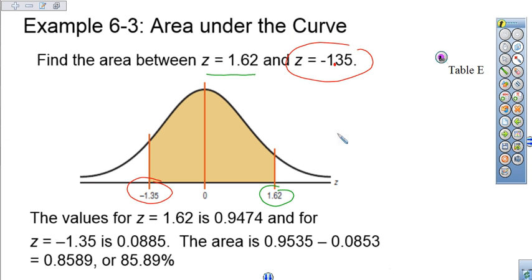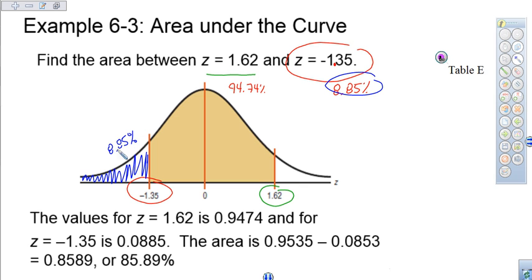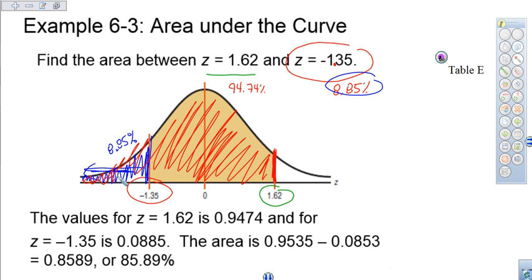So we come back across. We had z = 1.62 turned into 94.74%, and z = -1.35 turned into 8.85%. This 8.85% is the area from that z-score to the left. Whereas the 1.62 means that all of this area from that z-score all the way down is 94.74%.